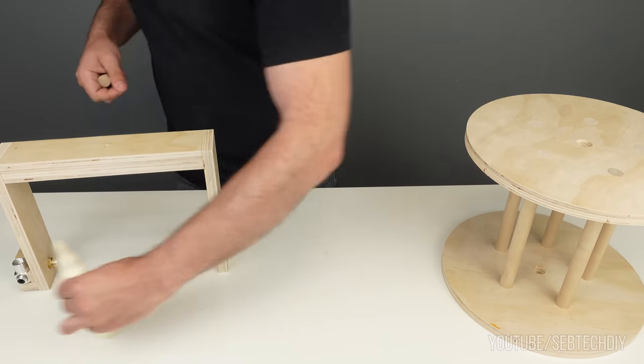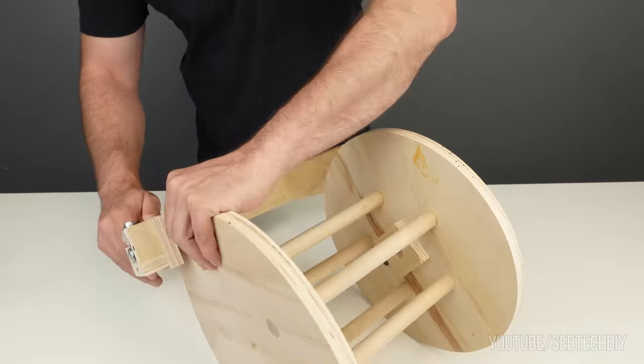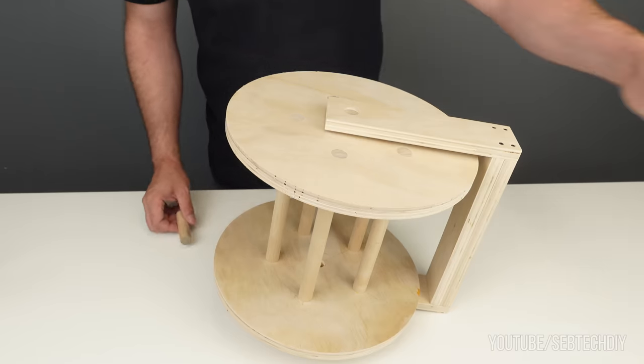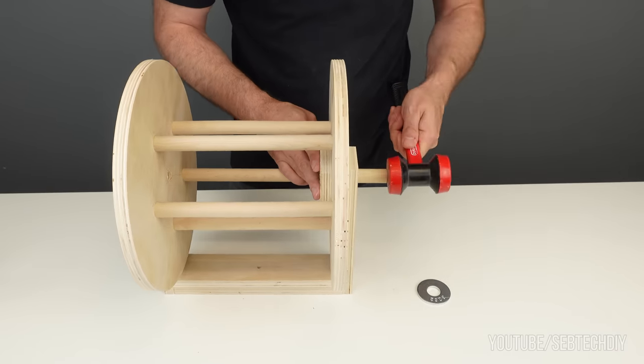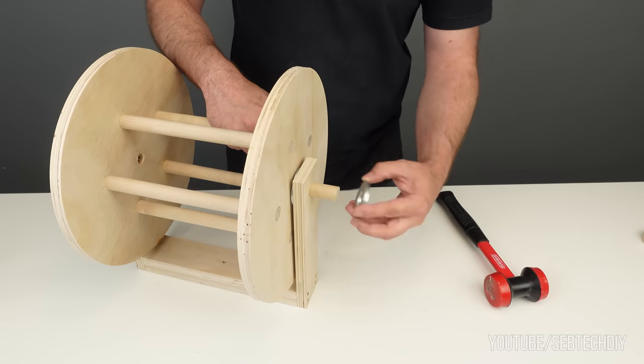I'm ready to assemble the reel inside its support. I first mount the reel on the fitting side, then I insert the dowel on the other side to secure it in place. I will place a metal washer between the reel and the support, and another one between the support and the handle.